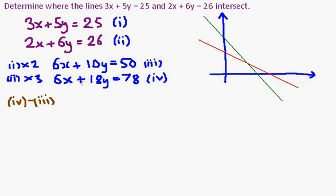I will get 18y take away 10y is 8y, and I will get 78 take away 50 is 28. So y will be equal to 28 divided by 8, which will simplify down to 7 halves.